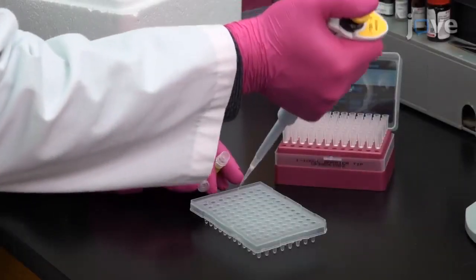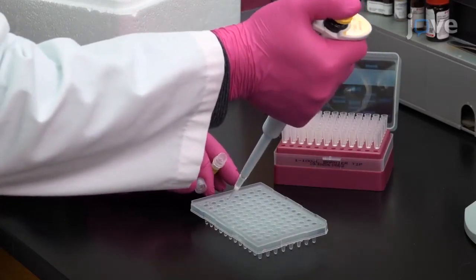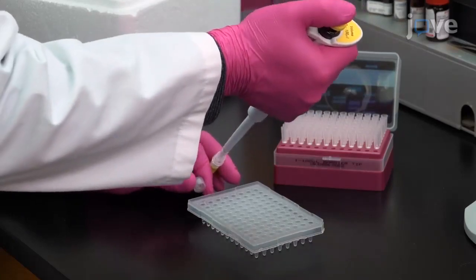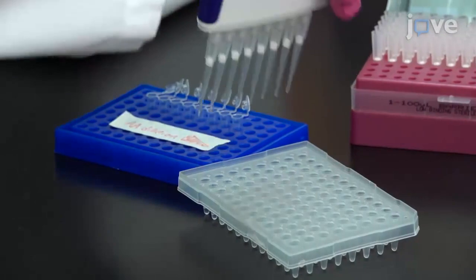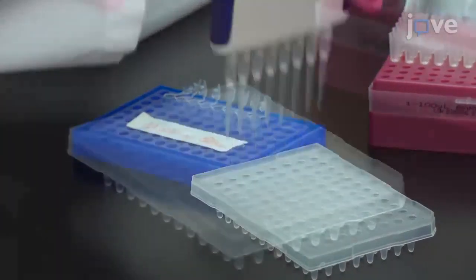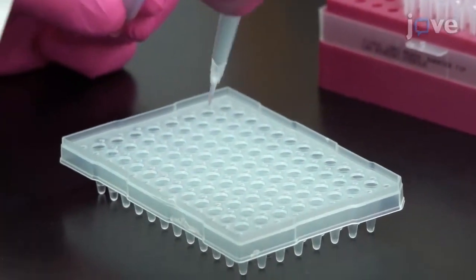Prepare reactions for digital PCR in duplicate according to the manufacturer's recommendations for using a digital PCR supermix designed for probe-based chemistry. Use the pooled genomic DNA as template DNA. Also add the 20X primer probe master mix as described in the text protocol.